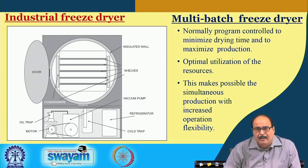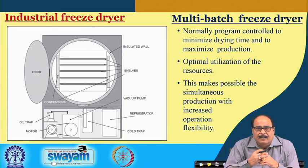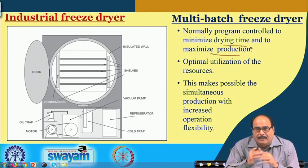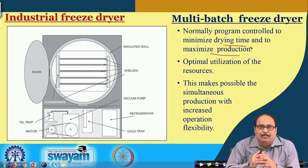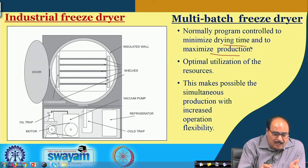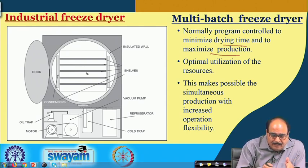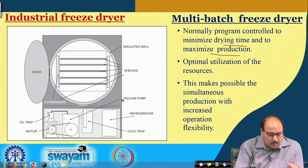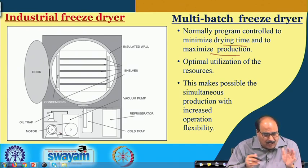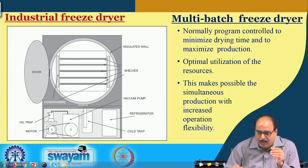Industrial freeze dryers may be of the multi-batch type. These are normally programmed to minimize drying time and to maximize production. This results in optimal utilization of resources and makes possible simultaneous production with increased operational flexibility. The chamber has condensers, insulated valves to avoid heat loss, and shelves where products can be kept. The system is provided with a vacuum pump, refrigeration for freezing, and all necessary instruments.